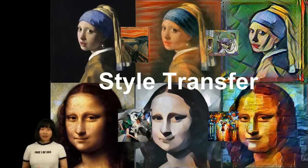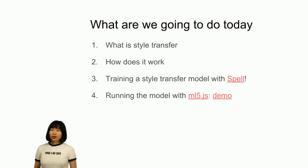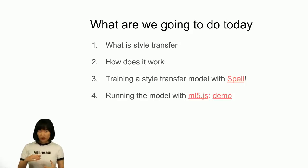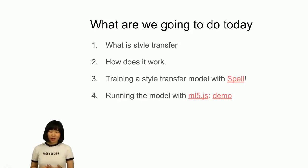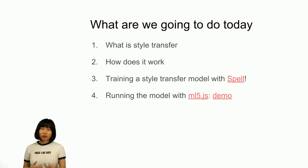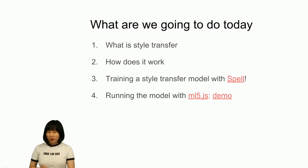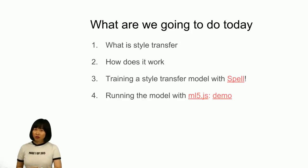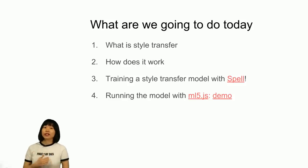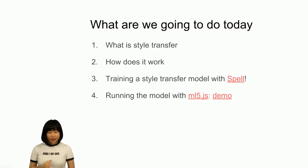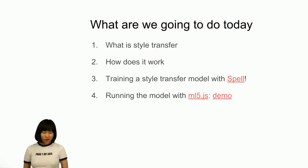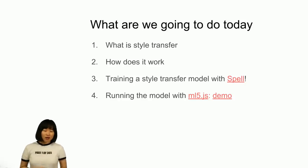Today we're going to talk about style transfer. We're going to do four things: talk about what is style transfer, how does it work, train a style transfer model with Spell, and port the model into ML5.js to create an interactive demo. Spell and ML5.js are both tools that make machine learning more approachable for a broad range of audiences. ML5.js allows us to run our model in the browser, and it's a JavaScript library based on TensorFlow.js.